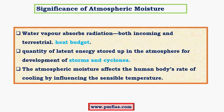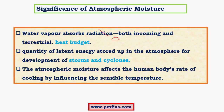Coming to the significance of atmospheric moisture — the first important significance is heat budget, which is the heat balance achieved by Earth where the amount of heat energy gained equals the amount lost. Atmospheric moisture absorbs incoming radiation and radiates it back in the form of infrared radiation, playing a very important role in the heat budget.